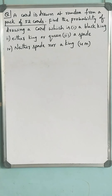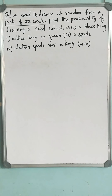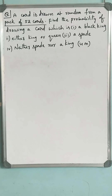The question is: a card is drawn at random from a pack of 52 cards. Find the probability of drawing a card which is: (a) a black king, (b) either a king or a queen, (c) a spade, (d) neither a spade nor a king.